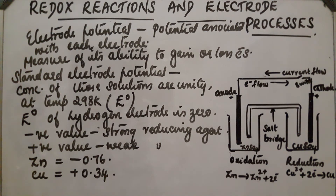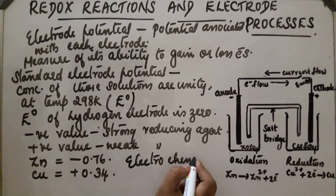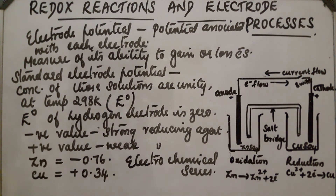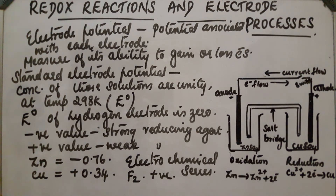All these standard electrode potentials arranged in increasing order form the electrochemical series, also called the activity series. This was discussed earlier in the session on aqueous redox reactions. From this series, zinc is −0.76 V, copper is +0.34 V, hydrogen is 0 V, and fluorine has a very high positive value, showing it is a strong oxidizing agent. This allows us to identify which electrodes are oxidizing or reducing agents.